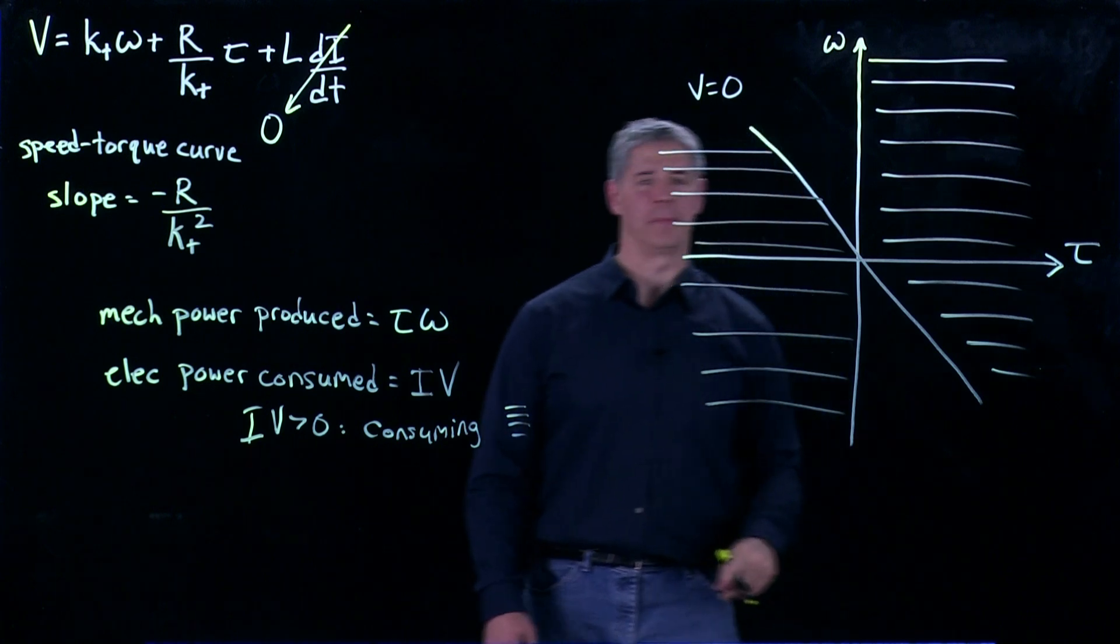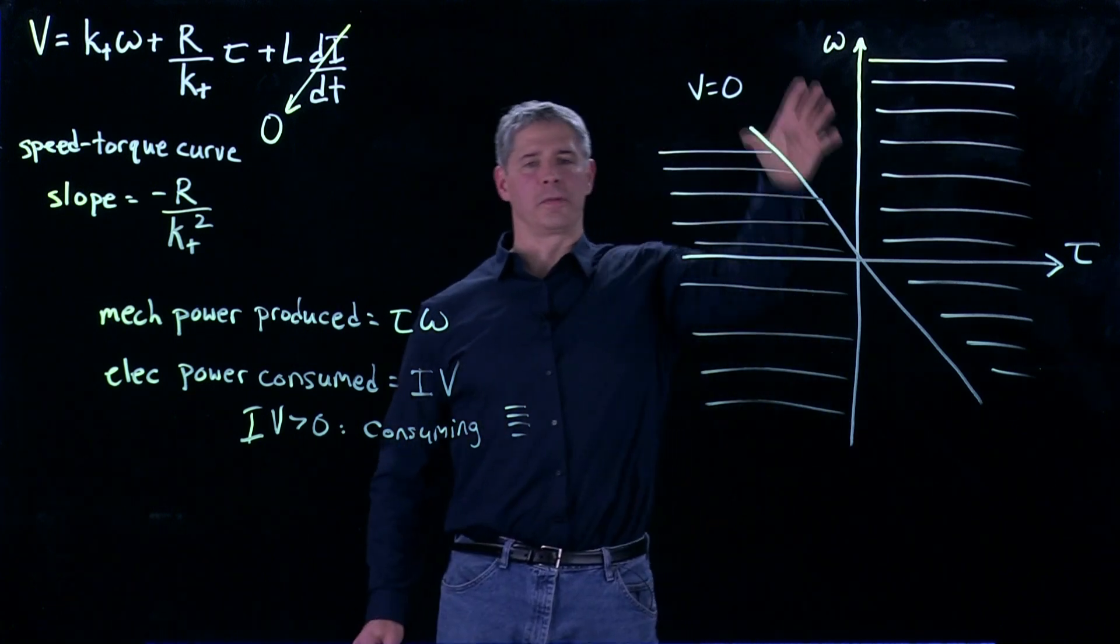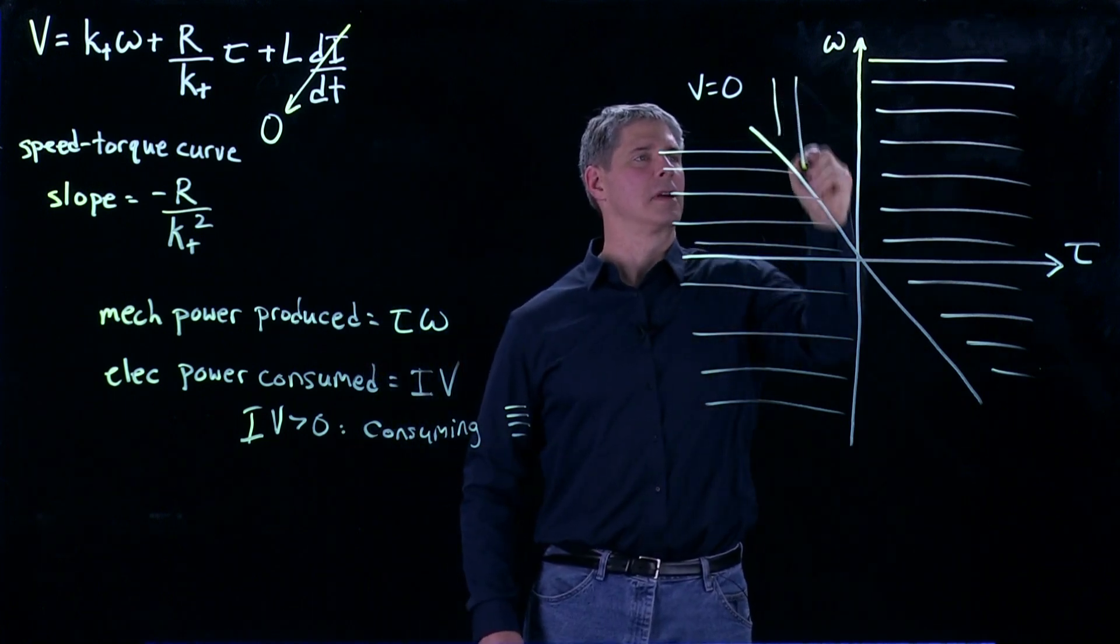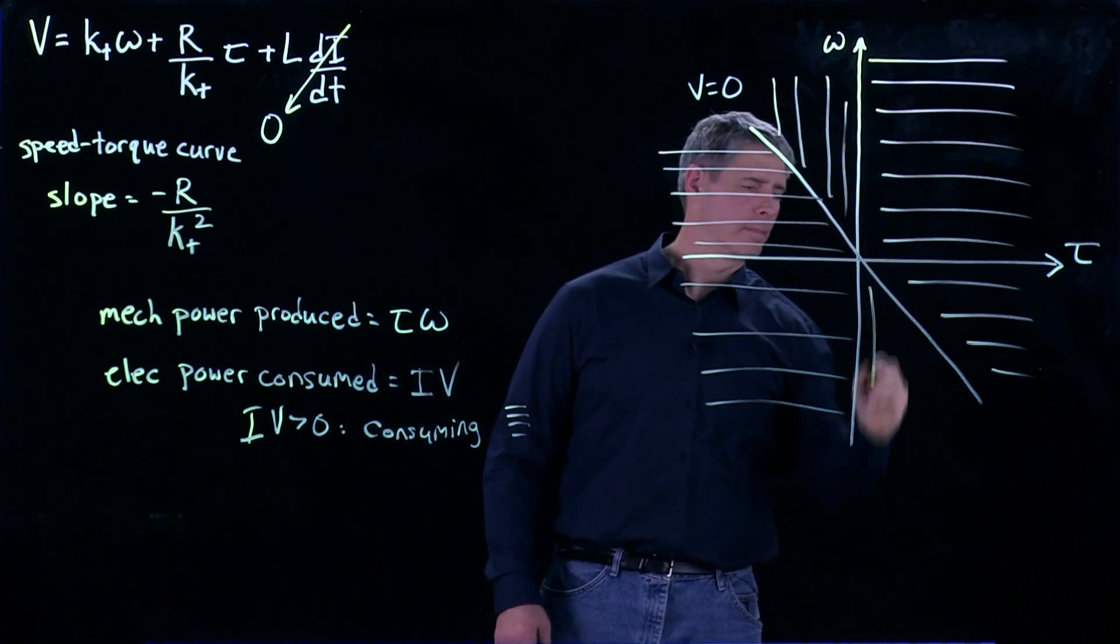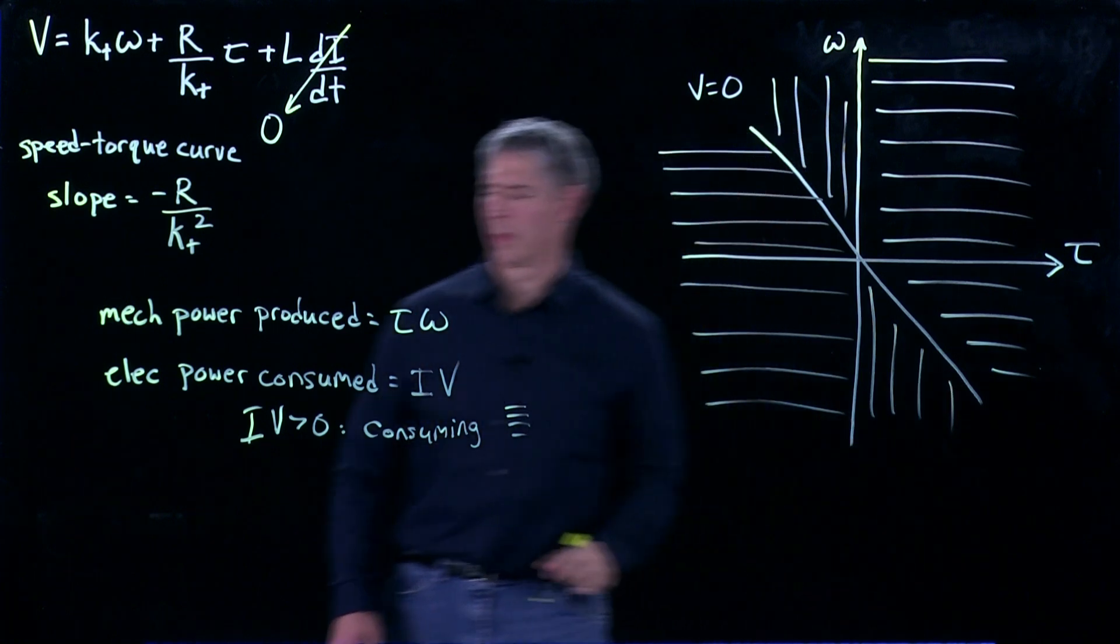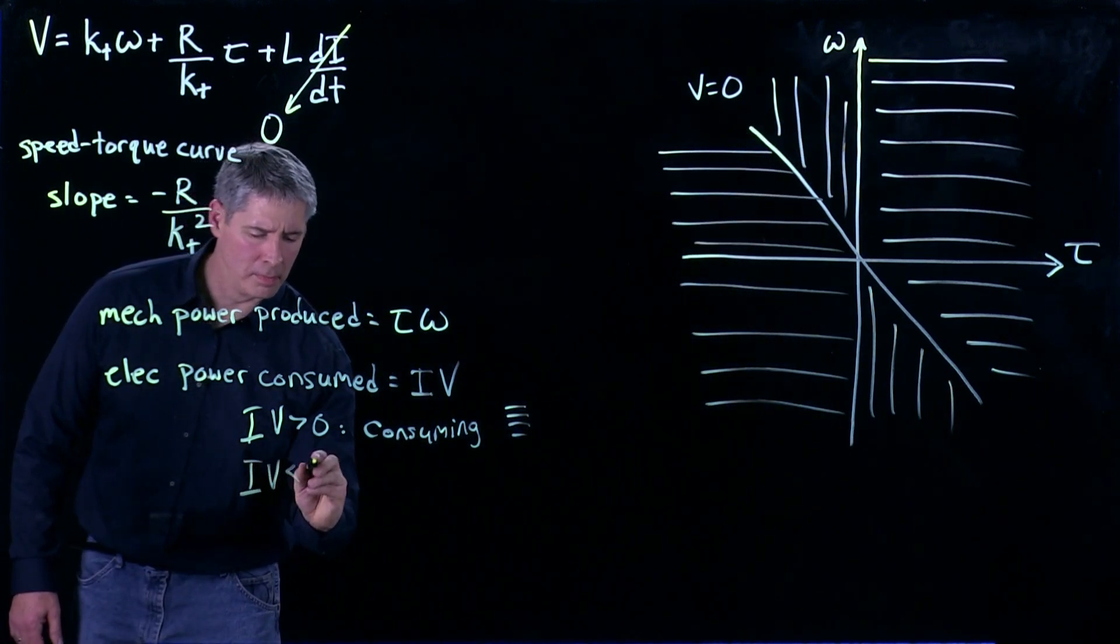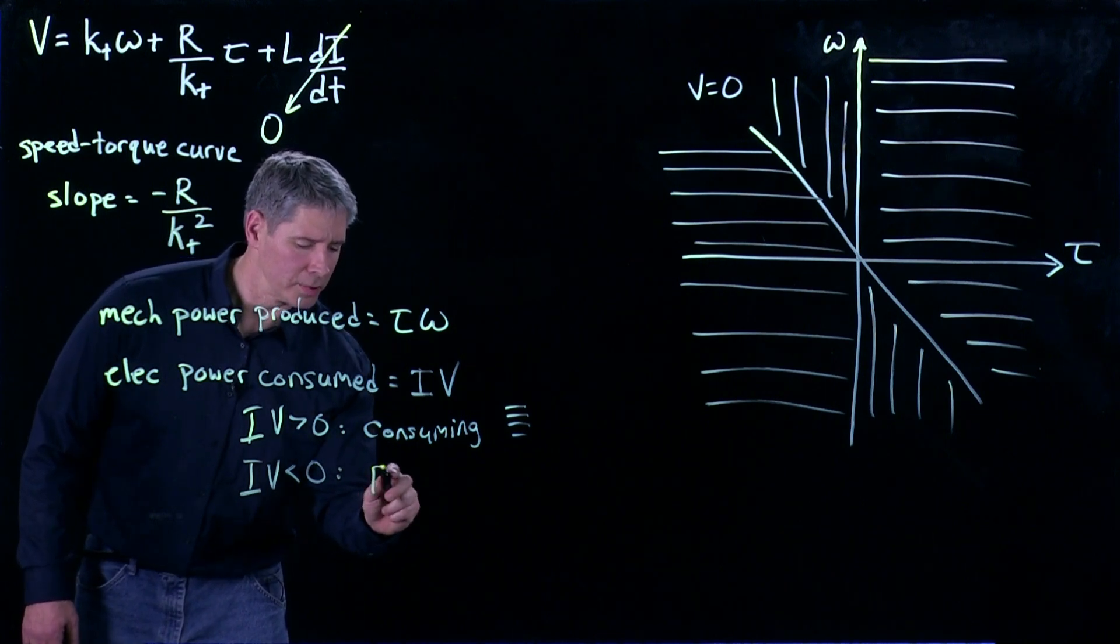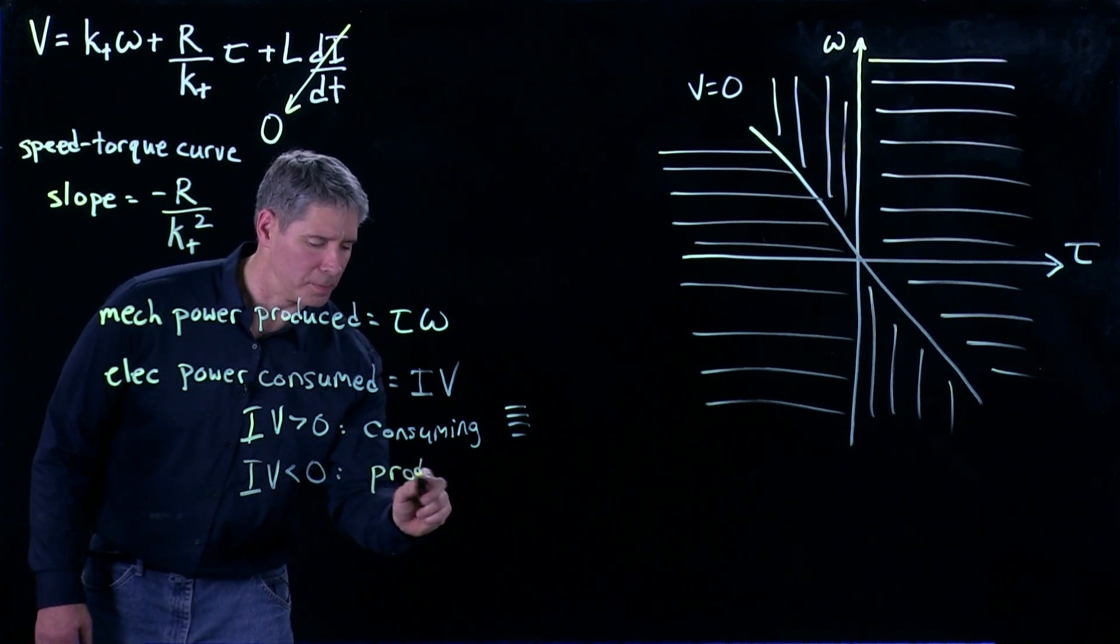So we're consuming electrical power. But that leaves these two regions where I and V have opposite signs, and I'll hatch them like this. And this is where IV is less than zero. And that's producing electrical power.